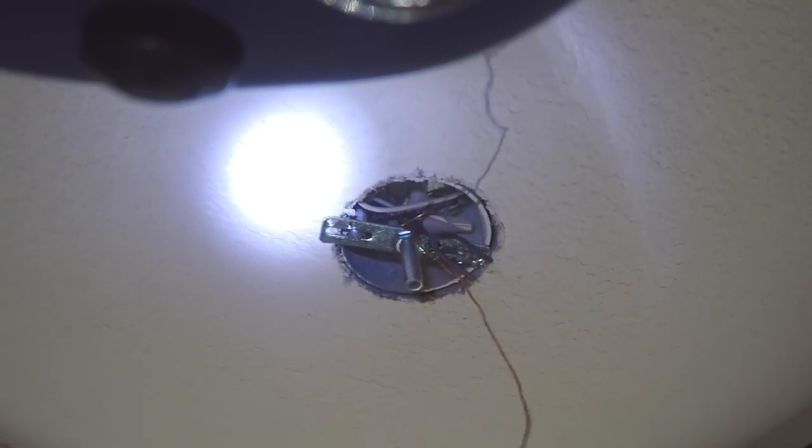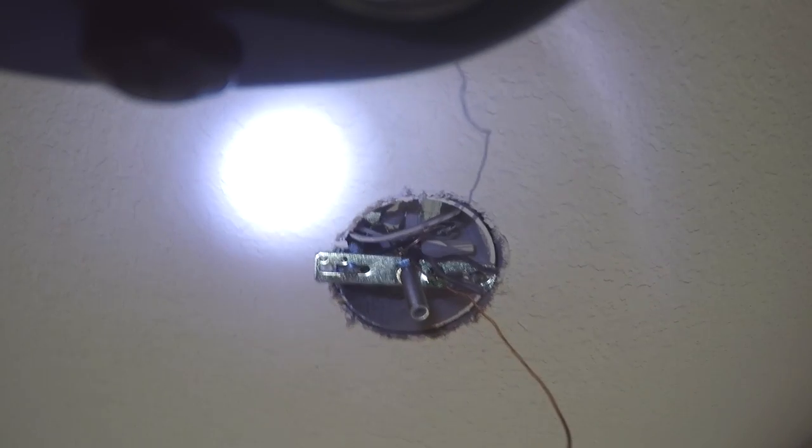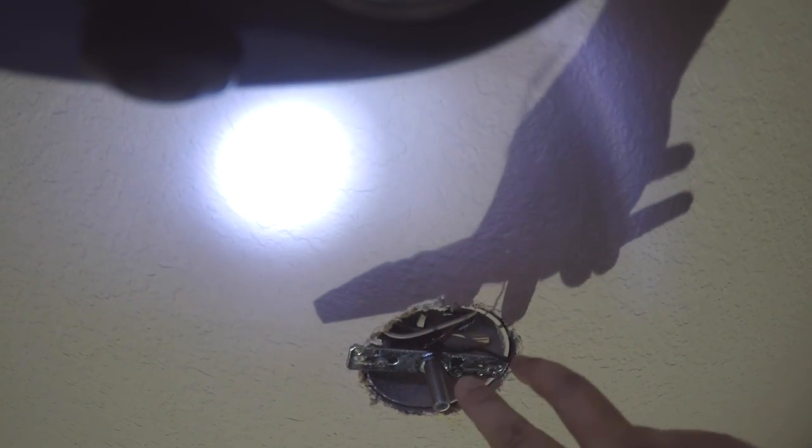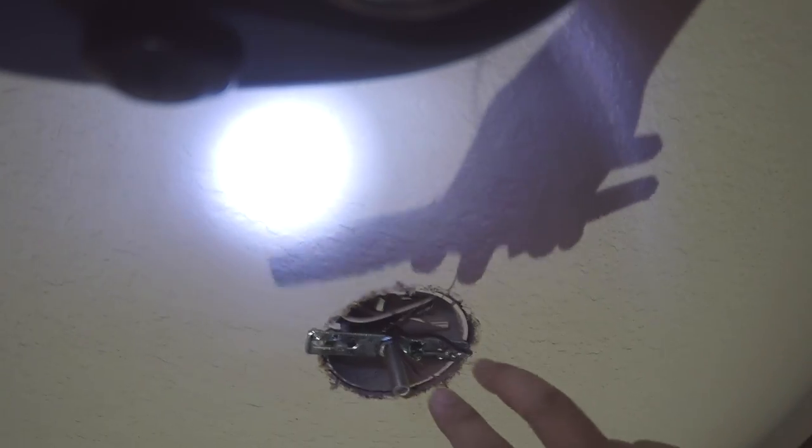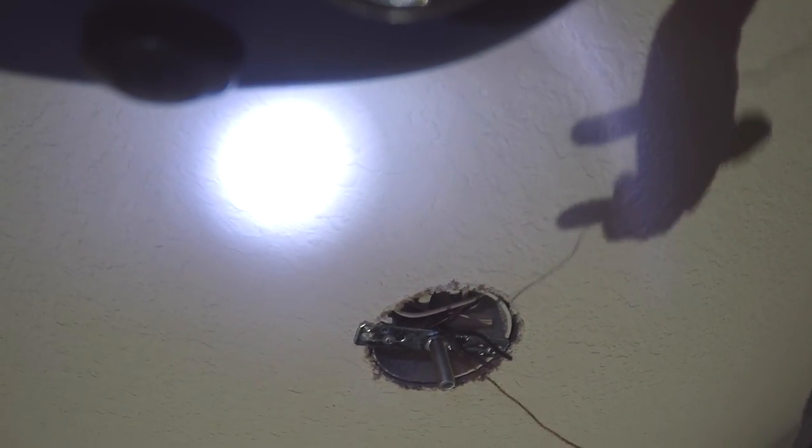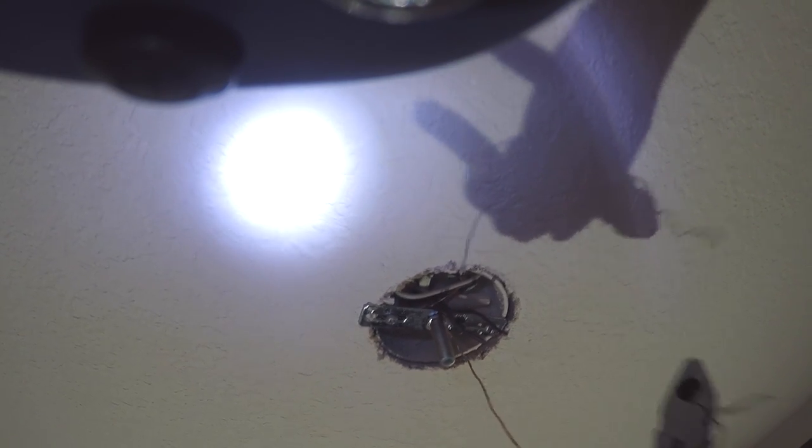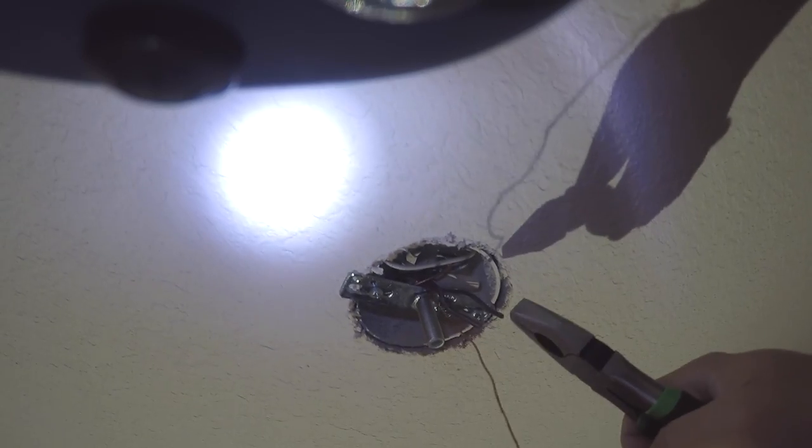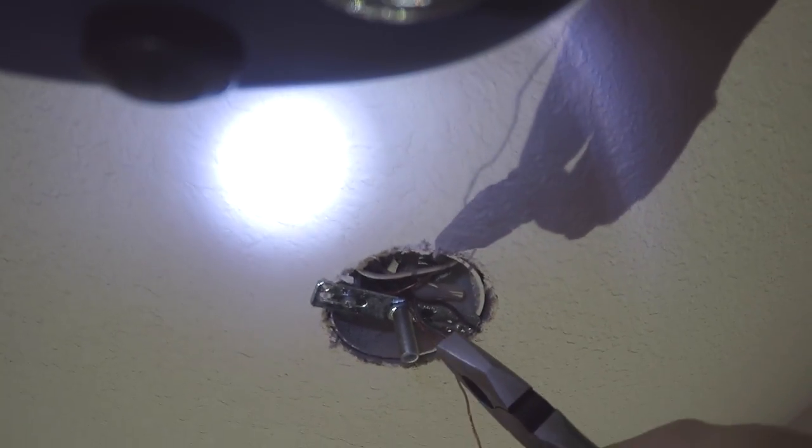This is how it looks like after removing the old lamp. As you can see, we have two black wires. The polarity doesn't matter because it's running on AC. Then we have a bare wire and that is the ground. So what we'll do is we'll connect the two black wires with the replacement lamp.